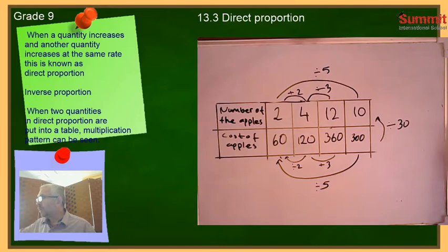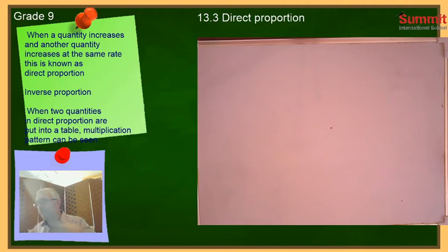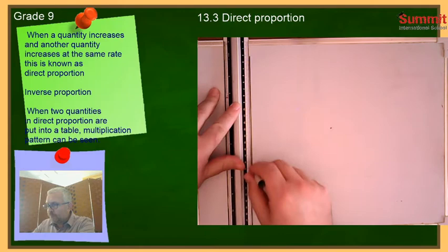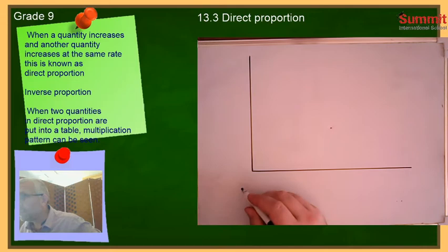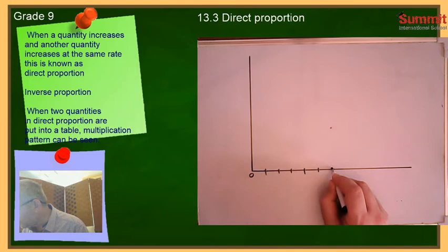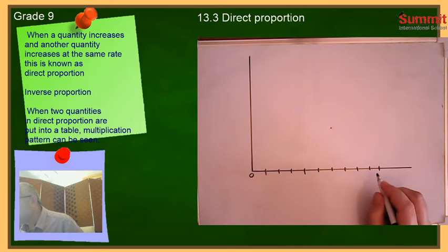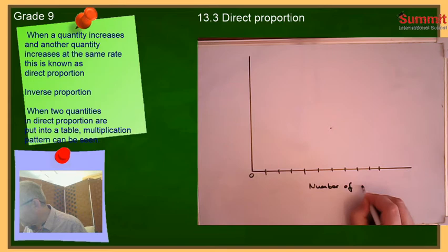Now we are going to see how to make a graph with direct proportion. Let's draw an x-y coordinate system. The x-axis shows number of apples: 1, 2, 3, 4, 5, 6, 7, 8, 9, 10. The y-axis shows cost in cents: 50, 100, 150, 200, 250, 300, 350.